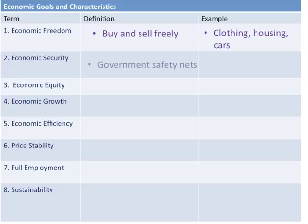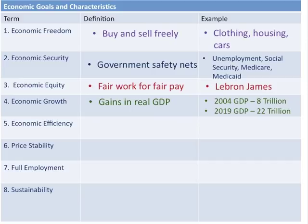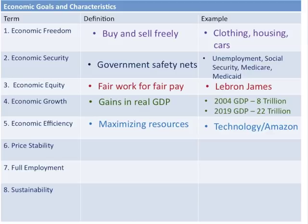Economic equity means fair work for fair pay — LeBron James should be paid more than a teacher because his skill is rarer and in greater demand. Economic growth is measured by gross domestic product; we expect GDP to grow over time. Economic efficiency means using resources to their maximum capacity, providing full employment. Technology, such as Amazon, allows us to produce more efficiently than before.